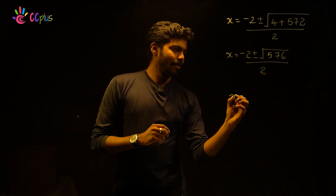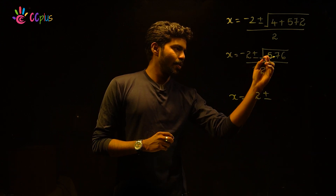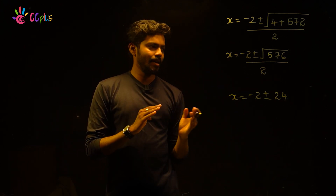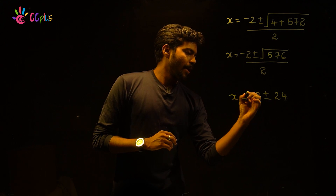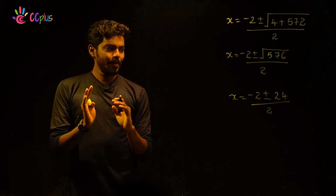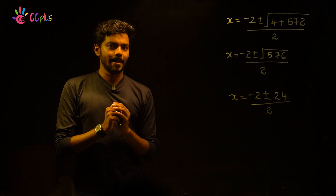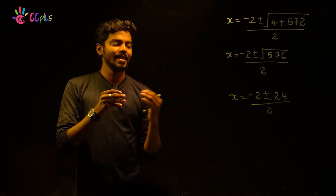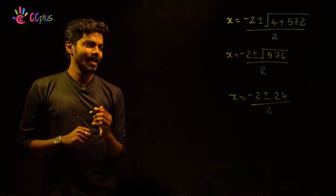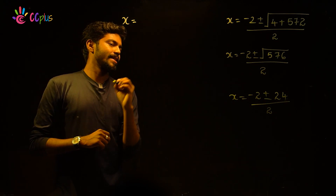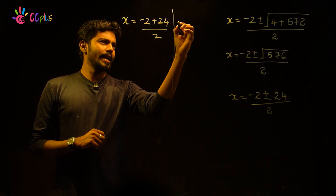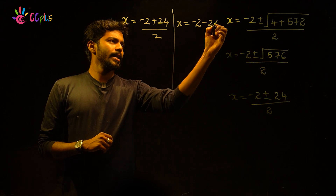The root of 576 is 24. So x equals minus 2 plus or minus 24, all divided by 2. We now split this into two cases: x equals minus 2 plus 24 divided by 2, and x equals minus 2 minus 24 divided by 2.